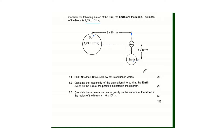The first question says: state Newton's universal law of gravitation in words. Newton's universal law of gravitation states that every body in the universe attracts every other body with a force that is directly proportional to the product of their masses and inversely proportional to the square of the distance between their centers.